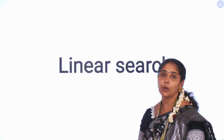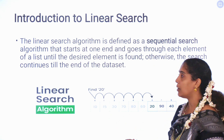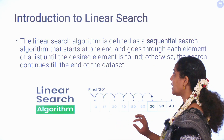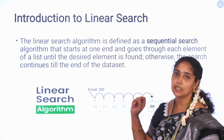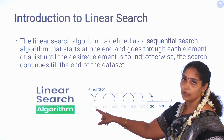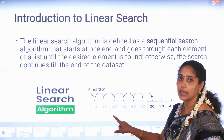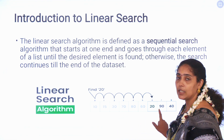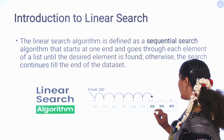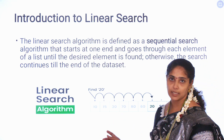Now we are going to see about linear search — what is the linear search algorithm and how we do that search. Linear search is also called a sequential search algorithm. It starts from one end of the array and continuously searches elements one by one. Until we reach the end of the array, if we have not found the element, that means the element is not in the list.